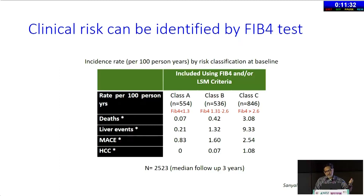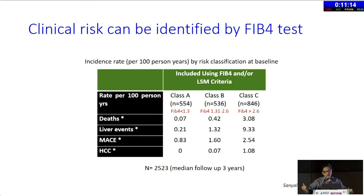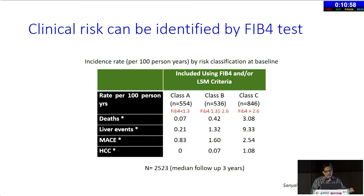A paper just accepted two weeks ago is a prospective study of approximately 2,500 patients where patients were classified on the basis of FIB4 — less than 1.3, more than 2.6, and in between. There is a stepwise increase, but it is exponential when you go from less than 2.6 to greater than 2.6. There is a big step up in liver events, cardiovascular events, and hepatocellular carcinoma. This is the study that needs to be replicated to see whether it tracks.